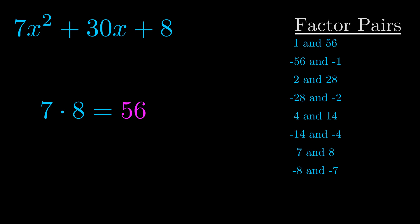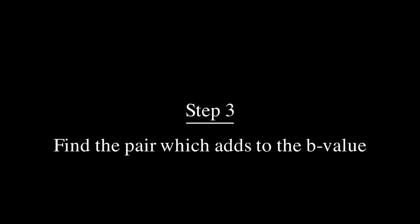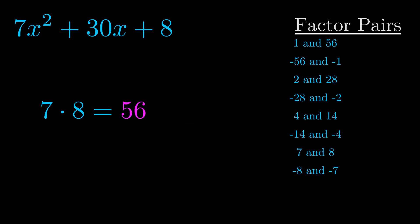Now once you have these factor pairs, the goal is to find which of these pairs adds to the b value. The b value is the coefficient on the x term. That's the middle term, the one that we haven't done anything with yet. And really this is the only factor pair that we need.